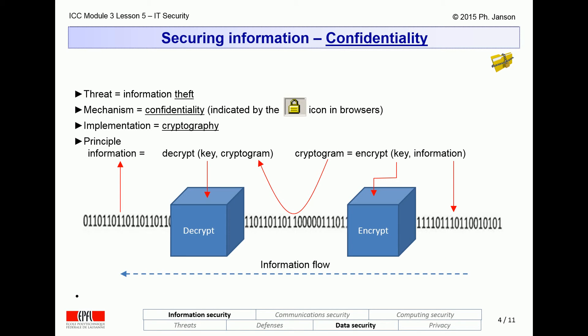To understand the principle of cryptography, consider this picture from right to left. On the right side is some sequence of bits of information to be protected against theft. With cryptography, these bits are pushed through a so-called encryption algorithm that transforms the original information into a so-called cryptogram. Cryptograms are unreadable by unauthorized parties. The encryption algorithm amounts to a complex mathematical combination of the original information with a so-called cryptographic key. For an authorized party to retrieve the original information, it must feed the cryptogram with a cryptographic key to a decryption algorithm that will perform an inverse mathematical transformation to restore the original information.